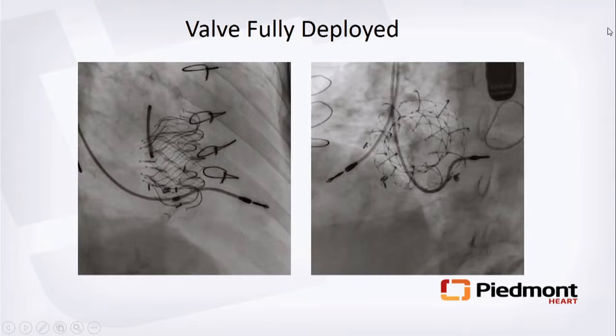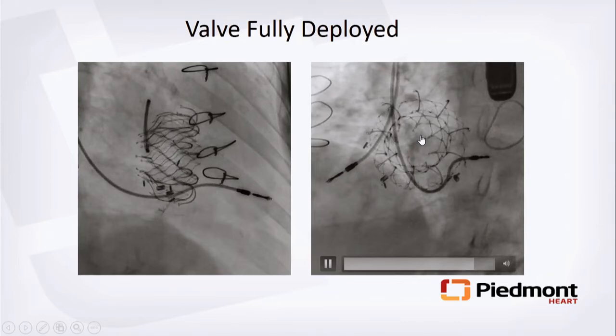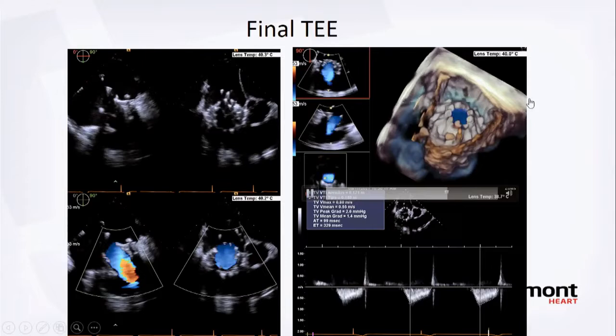The valve is fully deployed: short axis and long axis views show the outer frame at the 44/48/52mm dimension. The inner valve is actually a 28.5mm bovine pericardium. Final TEE shows complete resolution of tricuspid regurgitation — just a mild trace of TR near the pacemaker lead.